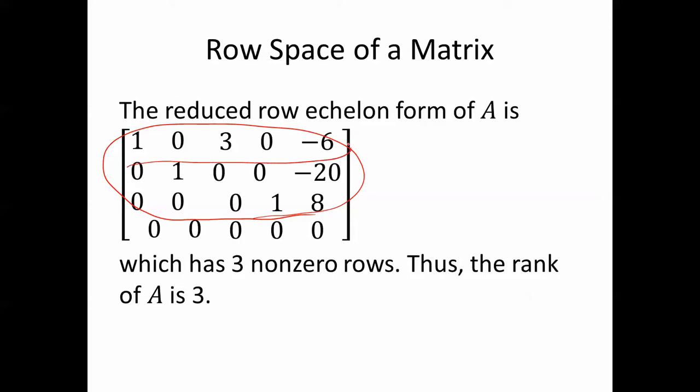That's the number of rows in a basis for the row space of A. This would be one vector, that would be another vector, and that would be another vector — those are the three vectors that make up the basis for the row space of A. So the rank of A, the dimension of the row space, is 3.